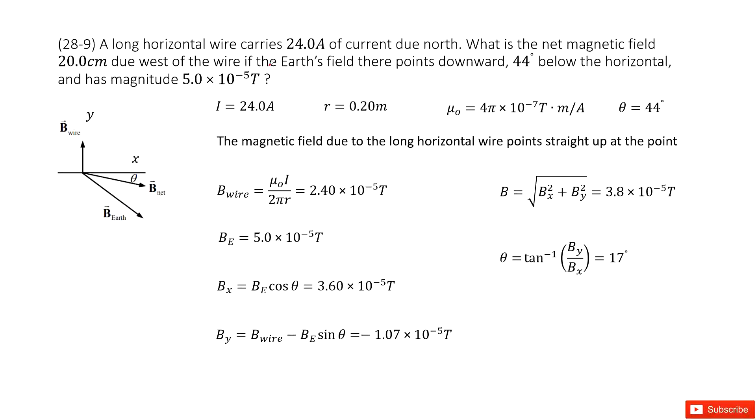The Earth's magnetic field at that location is pointing downward 44 degrees. So theta is 44 degrees, pointing downward.